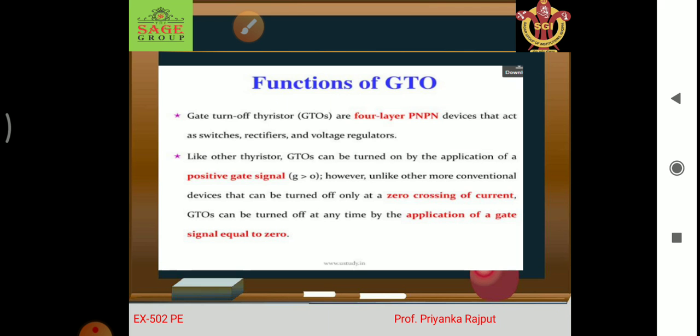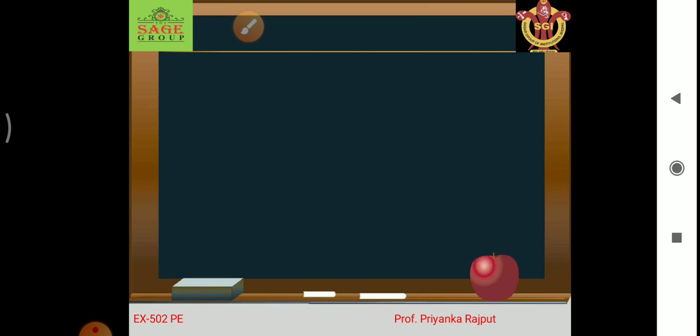Unlike other more conventional devices that can be turned off only at a zero crossing of current, a GTO can be turned off at any time by application of a gate signal equal to zero.